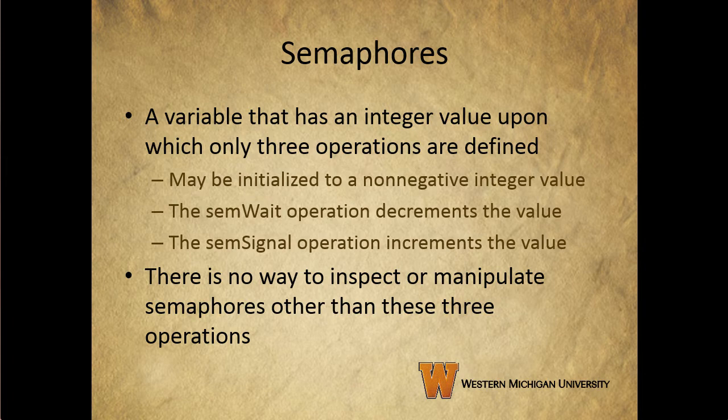To receive a signal via semaphore S, a process executes the primitive semWait. If the corresponding signal has not yet been transmitted, the process is suspended until the transmission takes place. To achieve this effect, we can view the semaphore as a variable that has an integer value upon which only three operations are defined. It can be initialized to a non-negative integer value. The semWait operation decrements the value — if the value becomes negative, the process executing semWait is blocked; otherwise, the process continues its execution. The semSignal operation increments the semaphore value, and if the resulting value is less than or equal to zero, a process blocked by a semWait operation, if there are any, is unblocked.